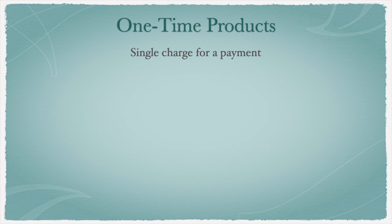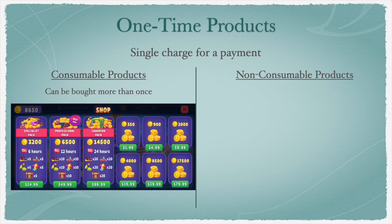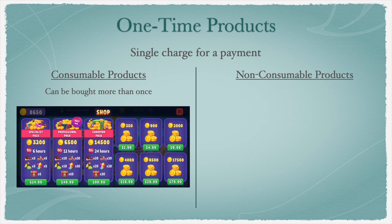These one-time products are divided into two types: consumable and non-consumable. A consumable product is one that a user consumes to receive in-app content — consumable products can be bought more than once in the app. For example, a user might purchase a stack of coins. When the user completes the payment, your app dispenses a fixed number of coins, and the stack of coins product becomes available again for the user to buy more if they want.